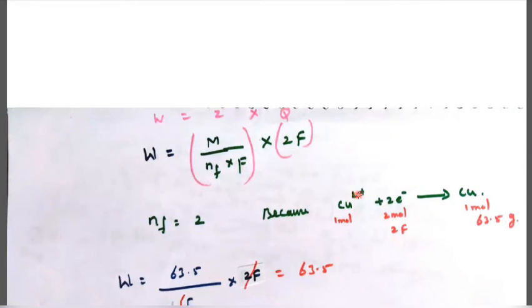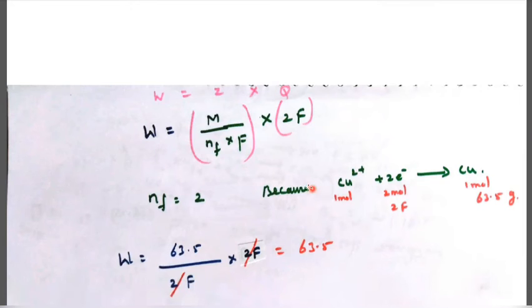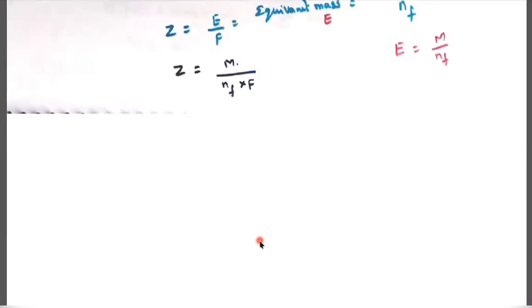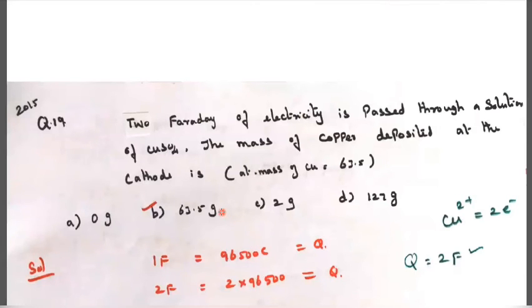Here Nf equals 2, because copper two plus plus two electron gives copper. When you see copper two plus and copper is zero oxidation state, between two plus and zero the difference is two. The two is considered as two electrons put near the higher oxidation number side. Here two moles, that is 2F. One mole is 63.5, the molar mass of copper. Molar mass of copper equals 63.5. Number of electrons Nf equals 2. Here 2F and 2F get cancelled. Weight equals 63.5.